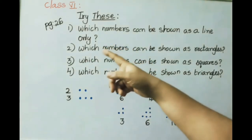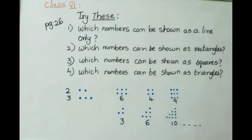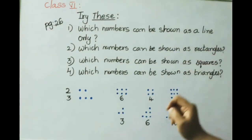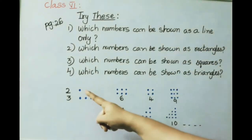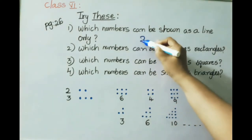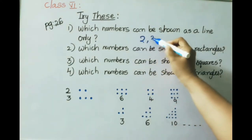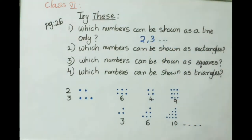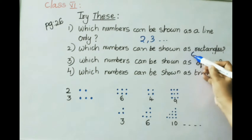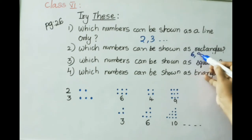Now see page number 26, Try These. Which numbers can be shown as a line only? Answer: 2, 3, etc. Which numbers can be shown as rectangles? Answer: 6, 8, etc.